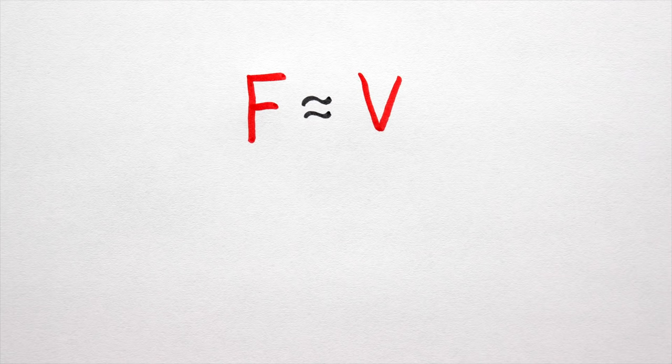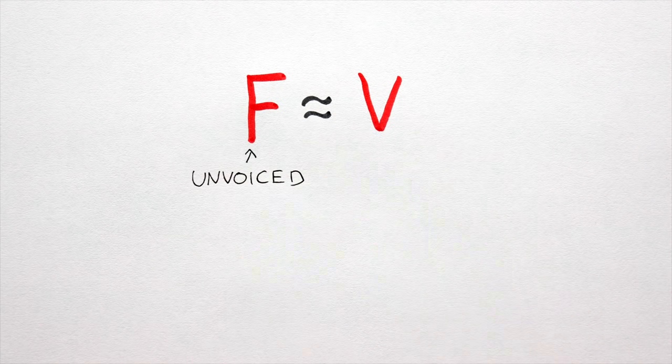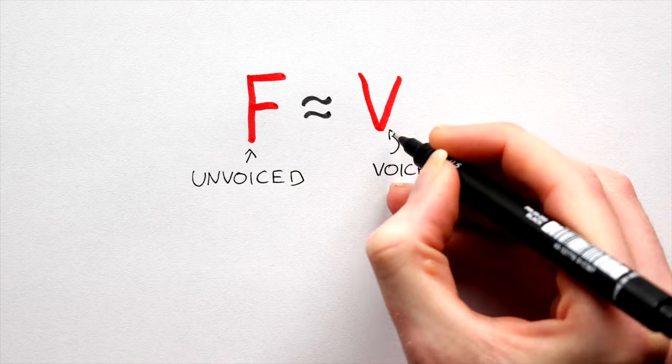See, F and V are a pair of consonants that are identical except for the buzzing that goes with V. We say that F is unvoiced, or voiceless, and V is voiced.